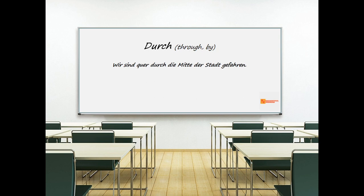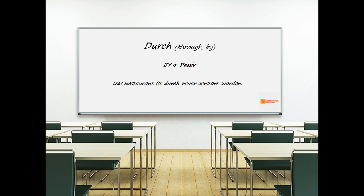Now 'durch'. The primary meaning of 'durch' is 'through'. Example: 'Wir sind quer durch die Mitte der Stadt gefahren.' In a minority of cases 'durch' is better rendered by 'by' in English. Example: 'Ich habe es durch Zufall gehört' — I heard it by chance. 'Durch' can also be rendered by 'by' in the passive where the agent of the action is not a person.